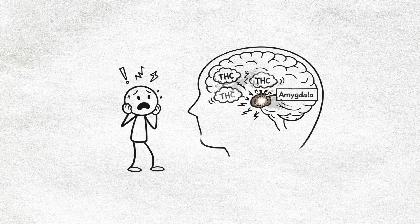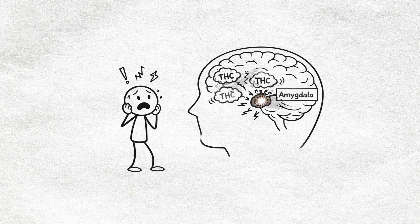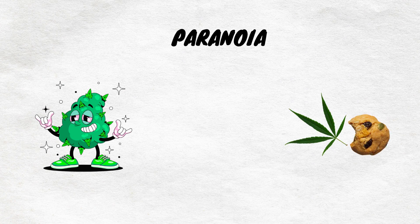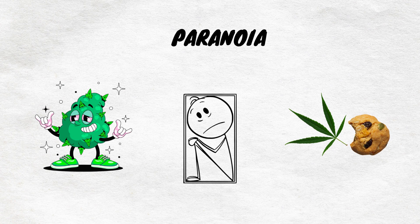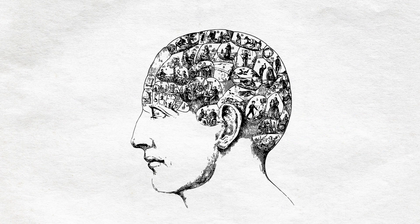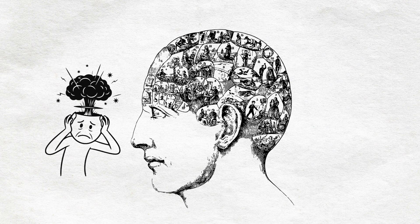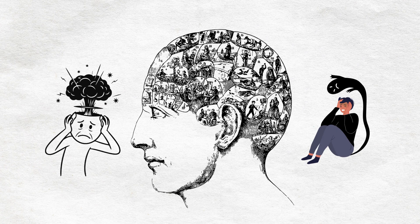This happens because THC can overstimulate your amygdala, the brain's fear center. In high doses or in people predisposed to anxiety, the substance doesn't calm your mind, it amplifies worry. Paranoia is more common with strong strains, edibles, or uncomfortable settings, but it's unpredictable. And for people with underlying mental health concerns, chronic use can trigger lasting anxiety or other serious mental health challenges. What starts as a tool for calm can become a trigger for distress.